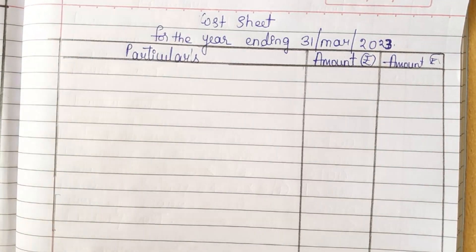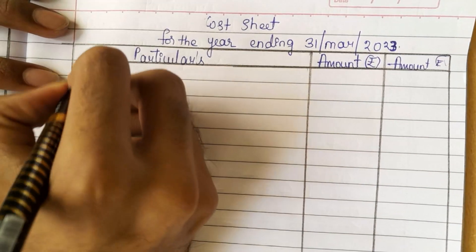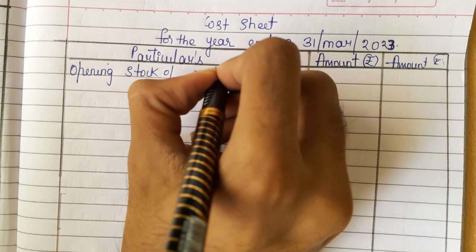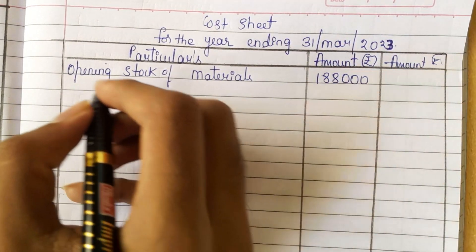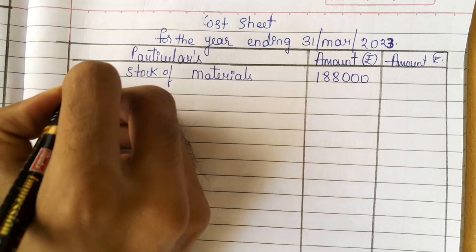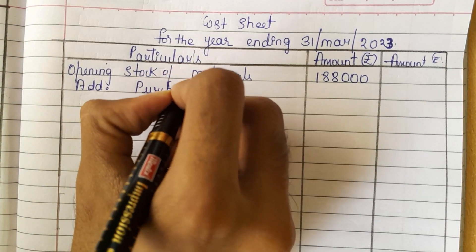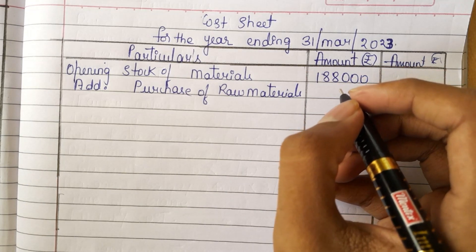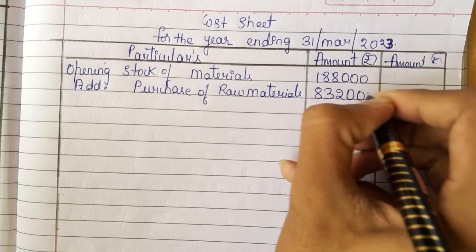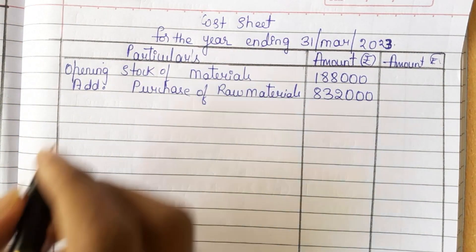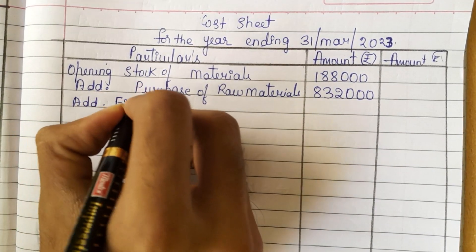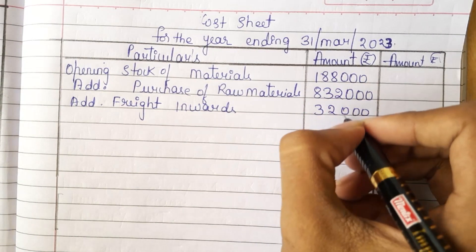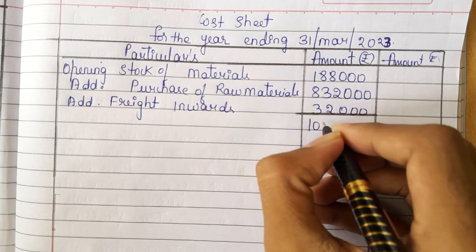This is the format. They have given the opening stock of materials, so we need to take first the opening stock of materials. Opening stock of materials is 1,88,000. For this, if any purchases are there, we need to add them. They have given materials purchased during the year — purchase of raw materials is 8,32,000. Any carriage inward or freight inward? Yes, we have freight inward of 32,000. So, we add all three items and we will get 10,52,000.